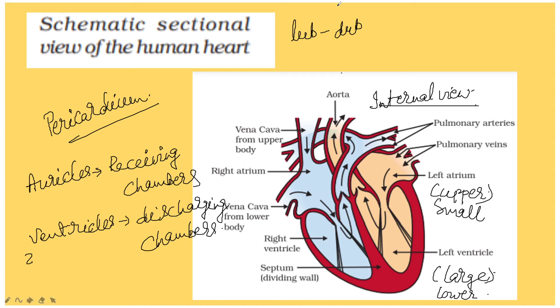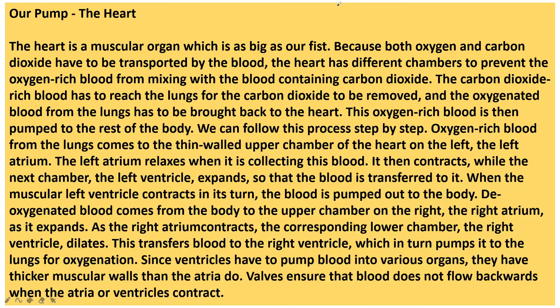The pulse rate is the same as the heartbeat. The rhythmic contraction of the heart is felt as a jerk in certain superficial arteries. Blood circulation through the heart is of double circulation. The blood vessels of the heart include the superior vena cava, inferior vena cava, pulmonary artery, and aorta. The valves present are the bicuspid valve, tricuspid valve, pulmonary valve, and aortic semilunar valve. Four chambers are present: two auricles and two ventricles.